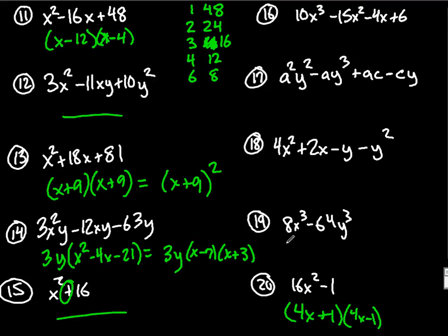Let's do 19. I can factor out an 8, leaving me with x cubed minus 8y cubed. Check and see if I can factor that anymore, which I cannot.